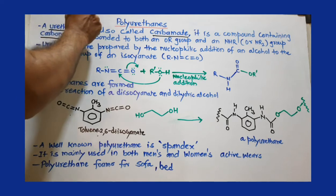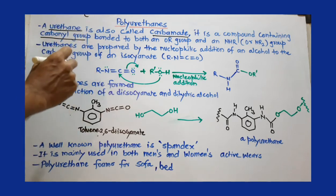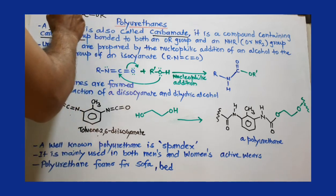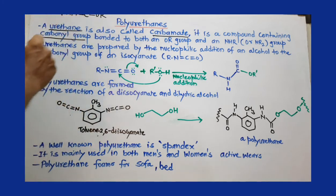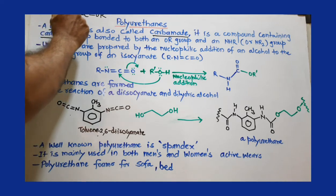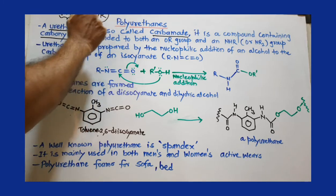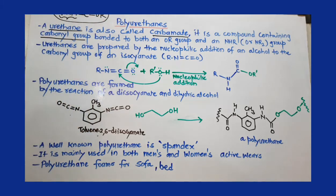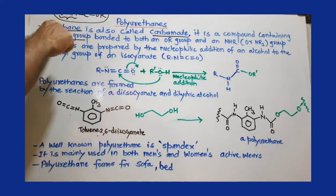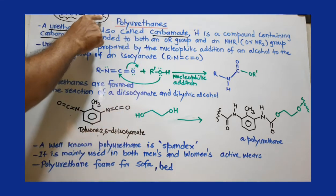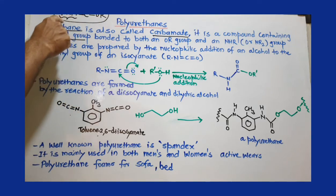Here the carbonyl group has two functional groups attached. One is OR and another is NHR or NR2, secondary or tertiary amine. This compound is called carbamate. What is important here? Urethanes are compounds called carbamates where the carbonyl group has an OR group attached as well as an NHR group attached.